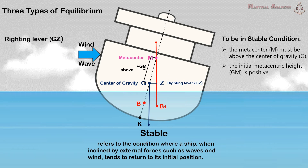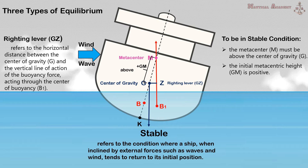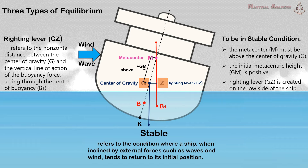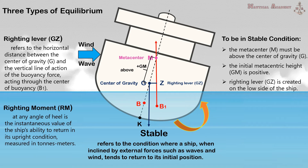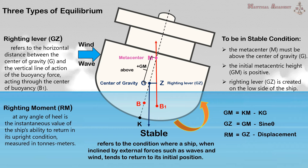The righting lever refers to the horizontal distance between the center of gravity G and the vertical line of action of the buoyancy force acting through the center of buoyancy B1. This righting lever is created on the low side of the ship, thus it produces a restoring moment known as the righting moment, which tries to return the ship to its initial upright condition. The righting moment at any angle of heel is the instantaneous value of the ship's ability to return to its upright condition, measured in ton-meters. We can calculate the value of metacentric height GM, righting lever GZ, and righting moment using these formulas, but I will make a separate video for these calculations. I have already made a video on how to calculate the metacentric height or GM; kindly check the link in the description.